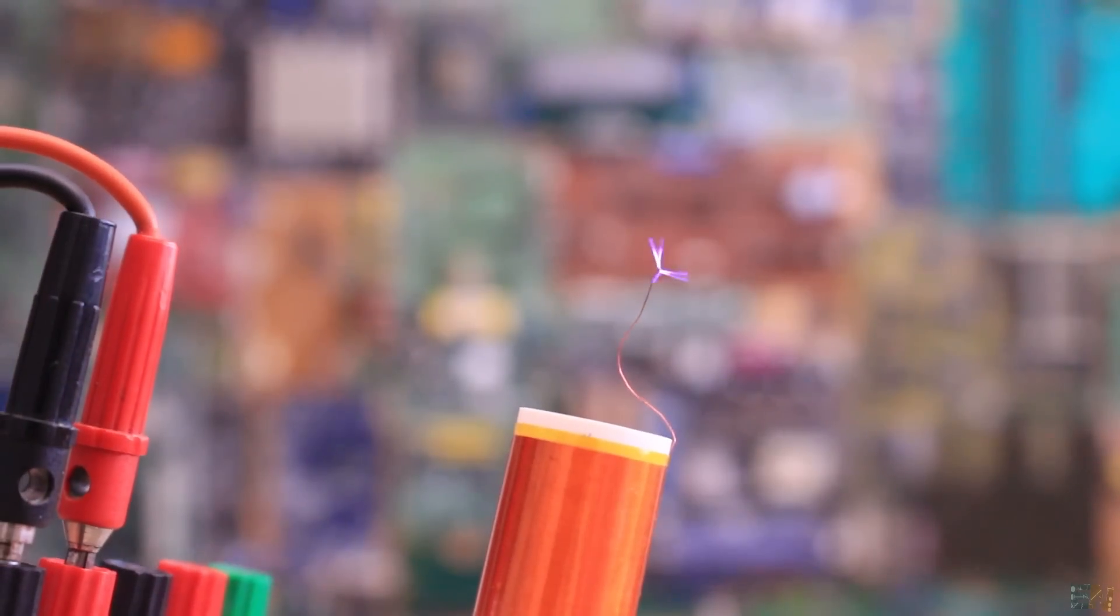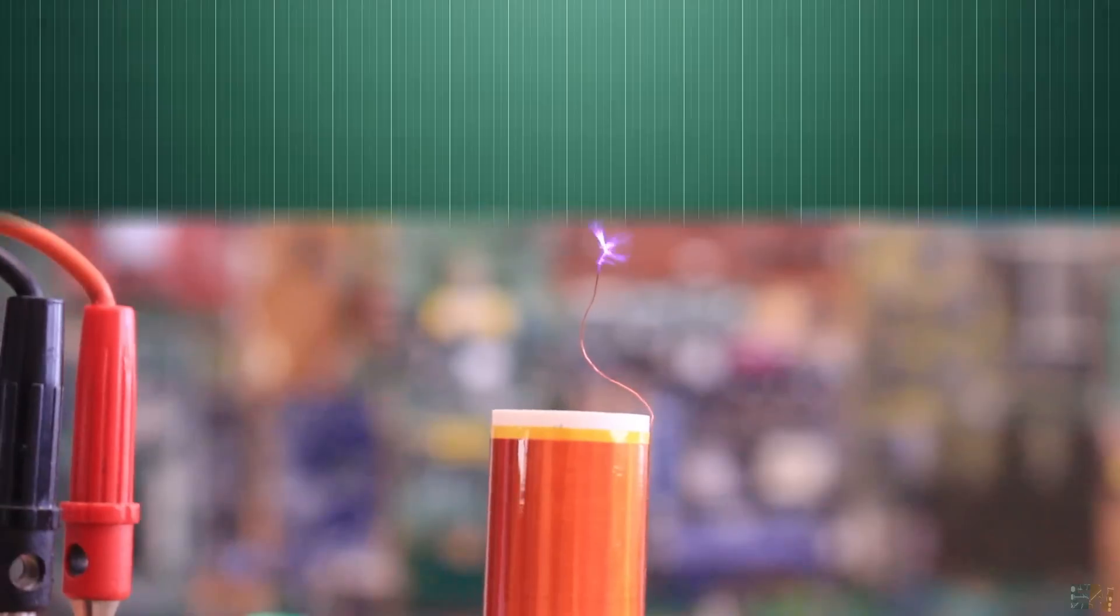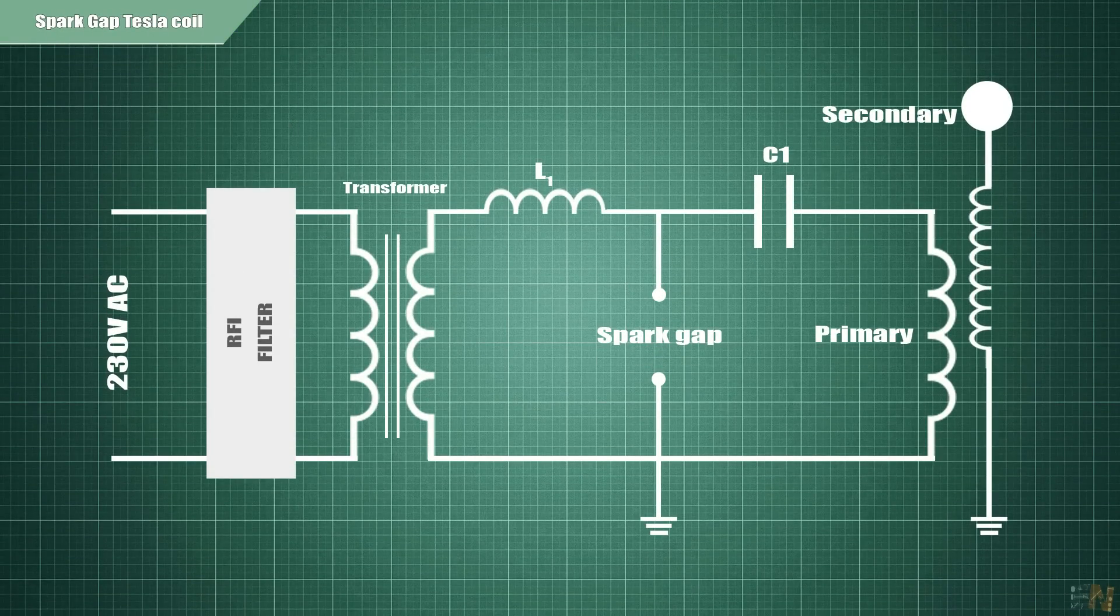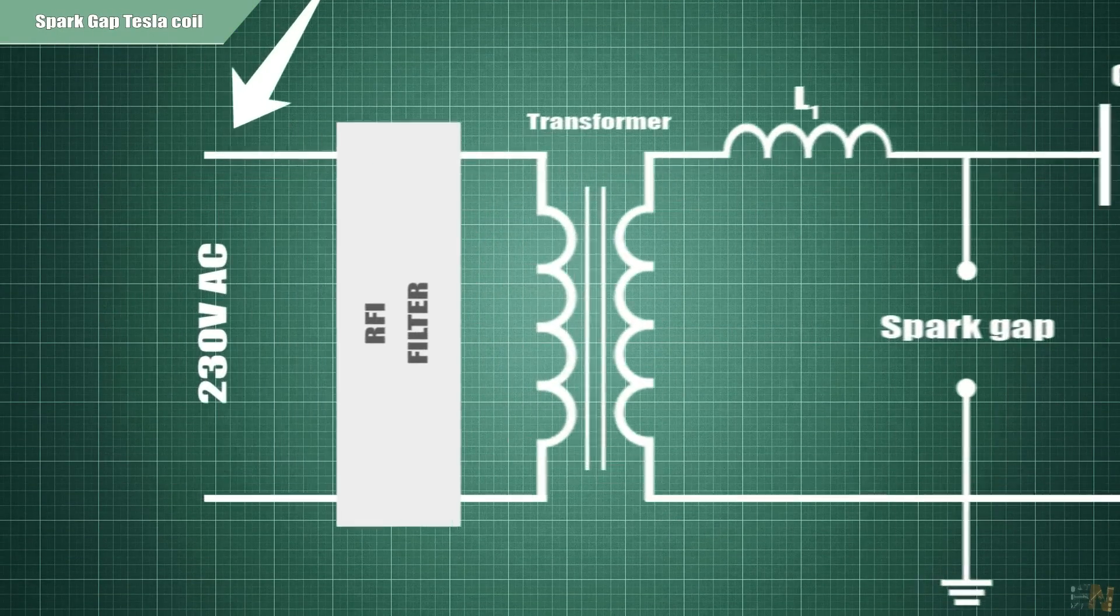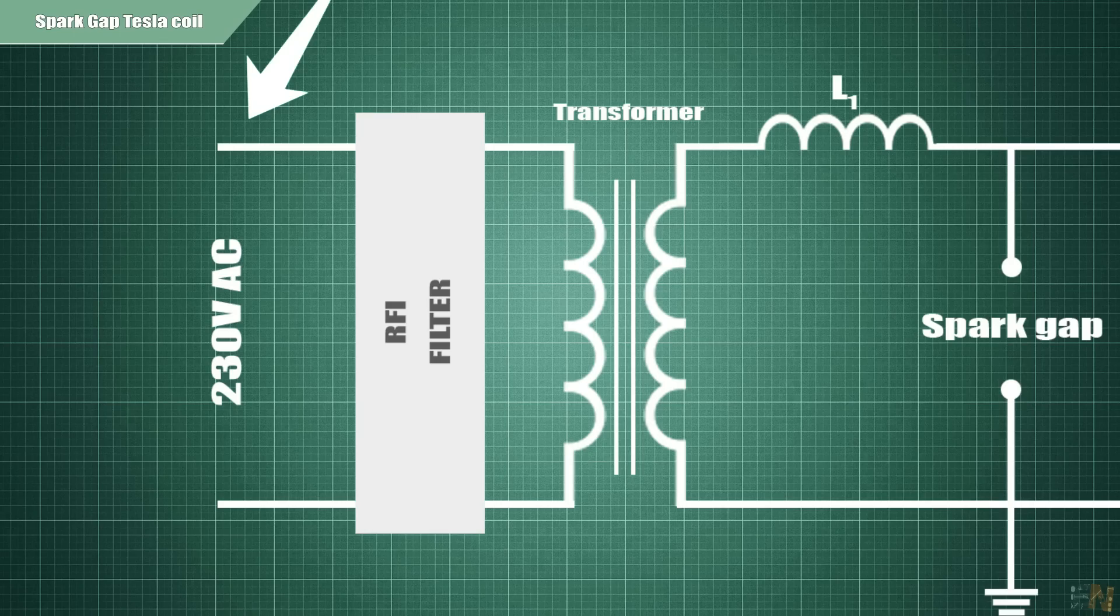Let's start with the main voltage Tesla coil circuit based on the gap spark. This is the circuit. As you can see, this one is directly connected to 230V AC from the outlet.